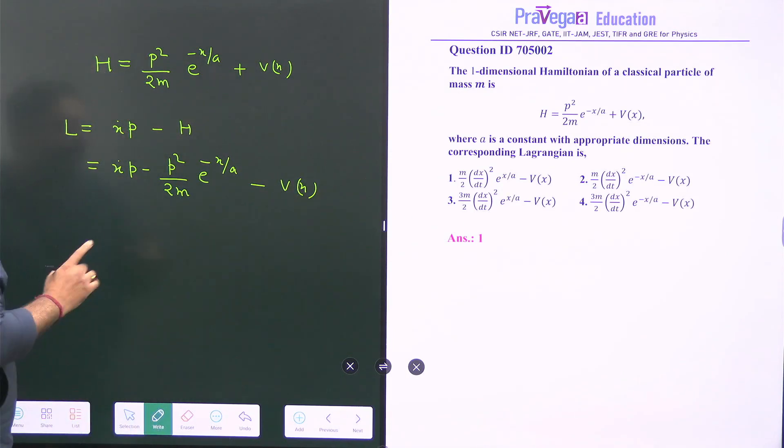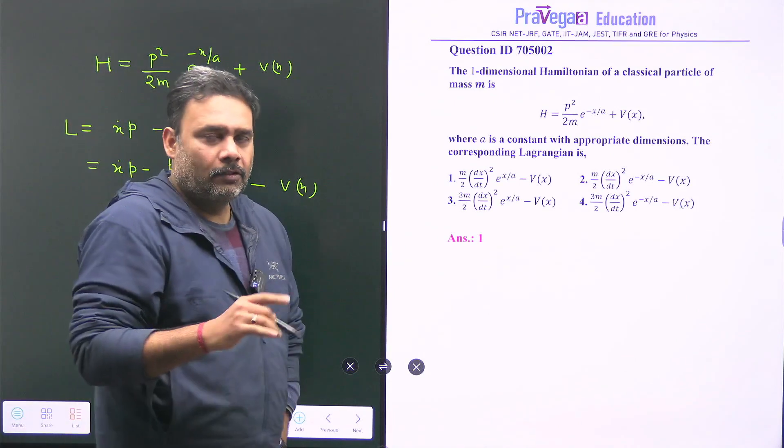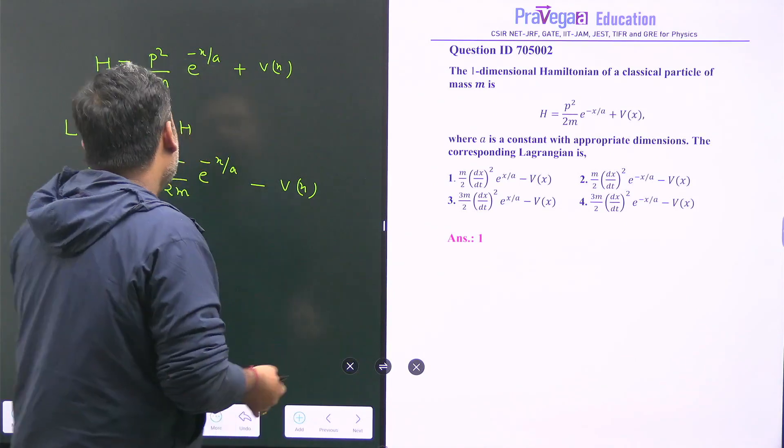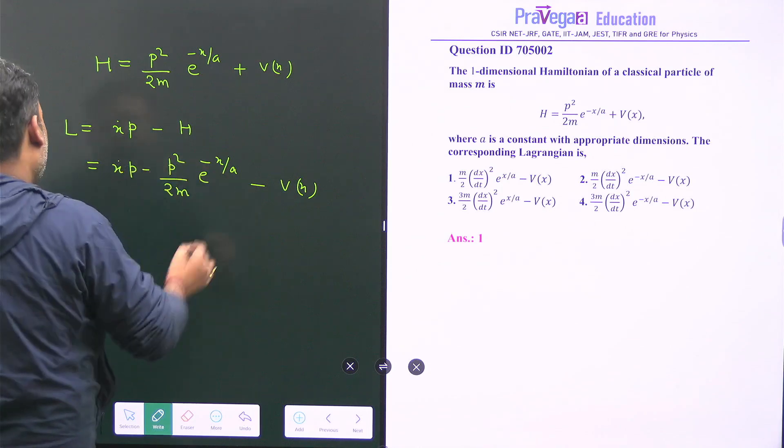And Lagrangian must be function of generalized coordinate and generalized velocity. So what do we have to do? We have to remove the momentum part from here.